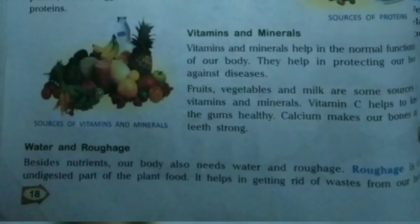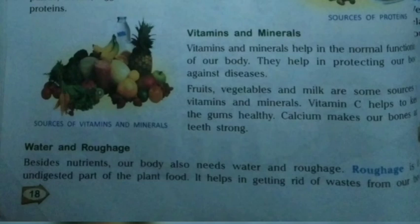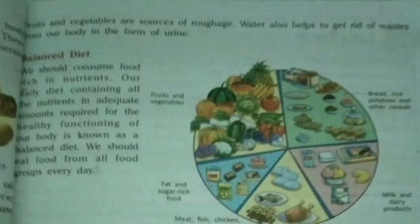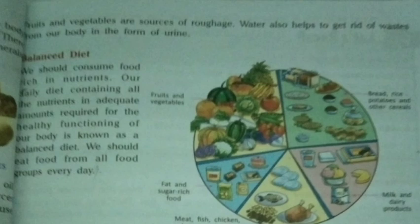Besides nutrients, our body also needs water and roughage. Water makes up about 60 percent of the human body. Roughage is the undigested part of plant food — it helps in getting rid of waste from our body. Fruits and vegetables are sources of roughage. Water also helps remove waste in the form of urine and sweat, flushing out unwanted salts from our body.